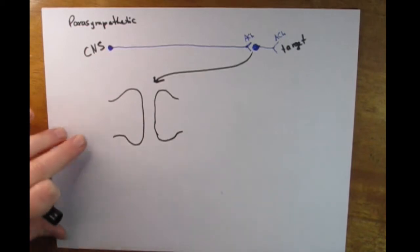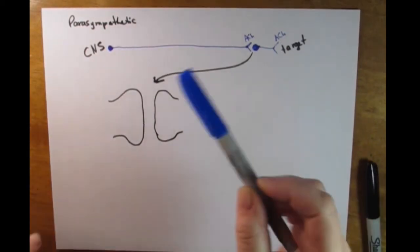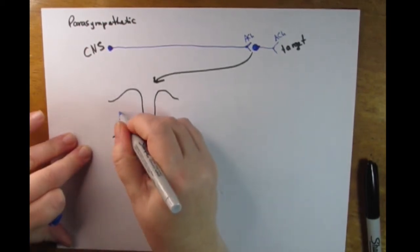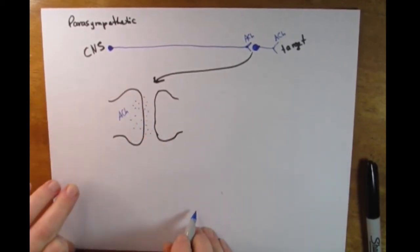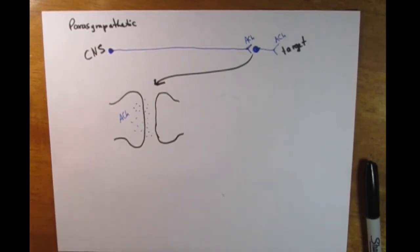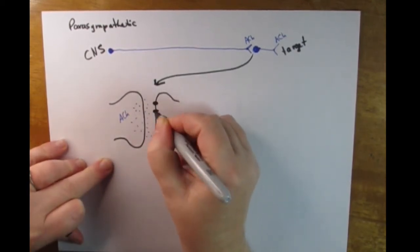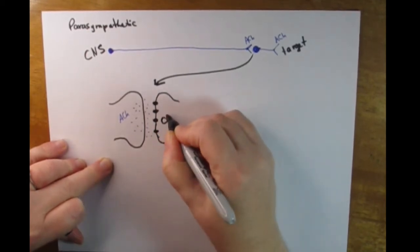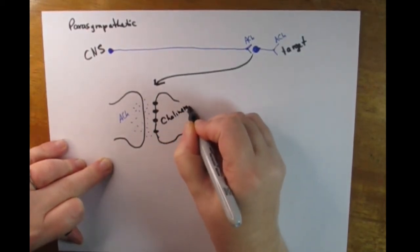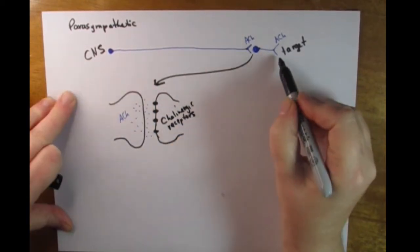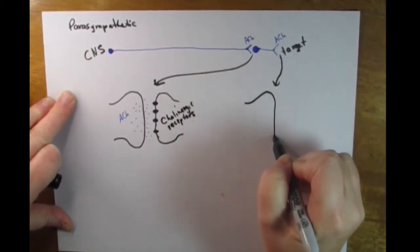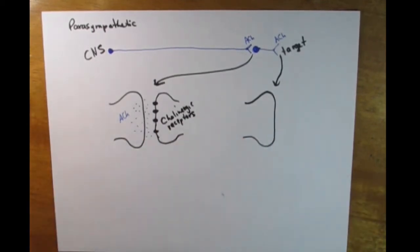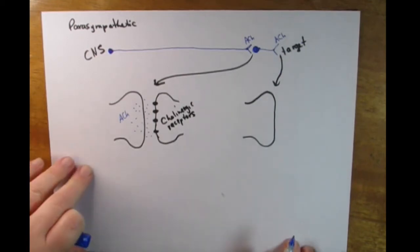We're going to take this first synapse and enlarge it for a closer look. This is a cholinergic cell, therefore it produces acetylcholine. Here we have the axon terminal releasing acetylcholine. We have receptors on the postsynaptic cell, and these receptors are called cholinergic receptors because they are sensitive to acetylcholine. We are also going to enlarge the interaction between the postganglionic cell and its target — there is the axon terminal of the cholinergic cell.